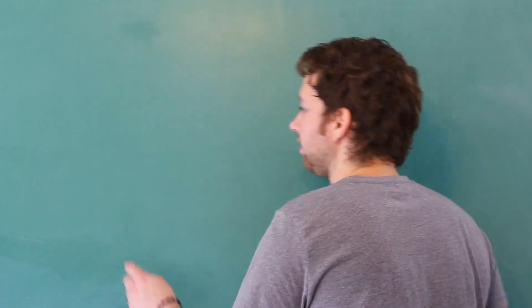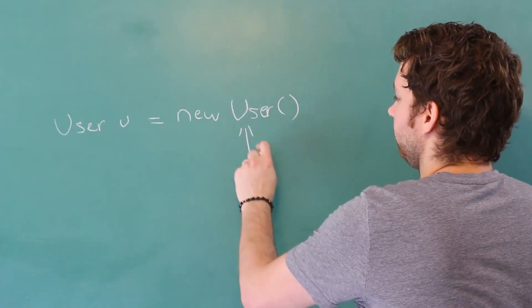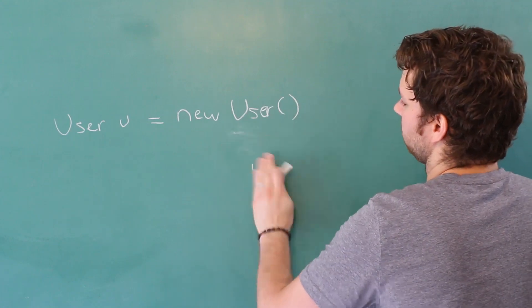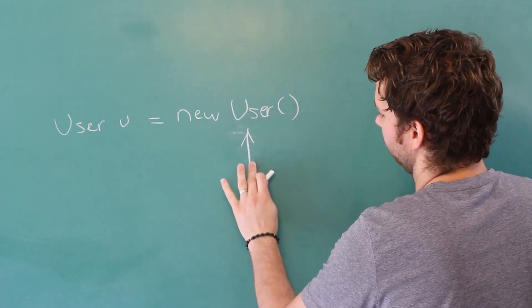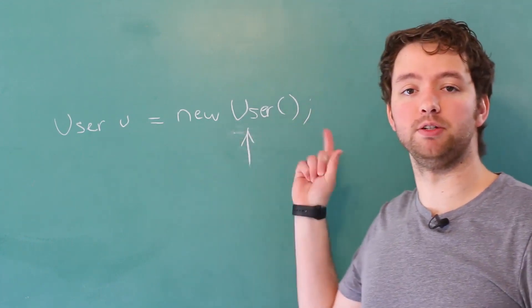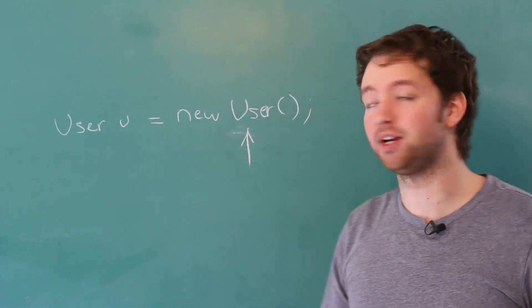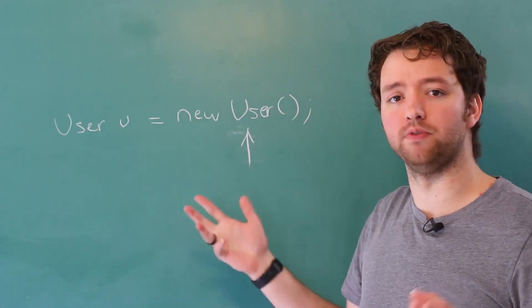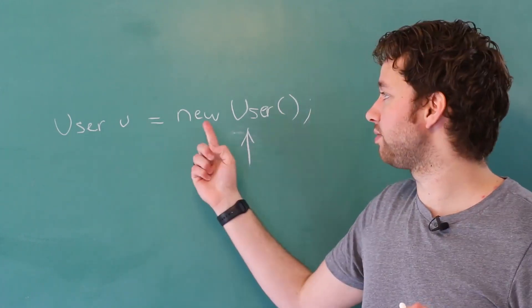So when we do something like this... this here is how we invoke a constructor. We've been using constructors this entire time, we just may not have known that. You see it looks really similar to invoking a method, but we prefix it with the new keyword.